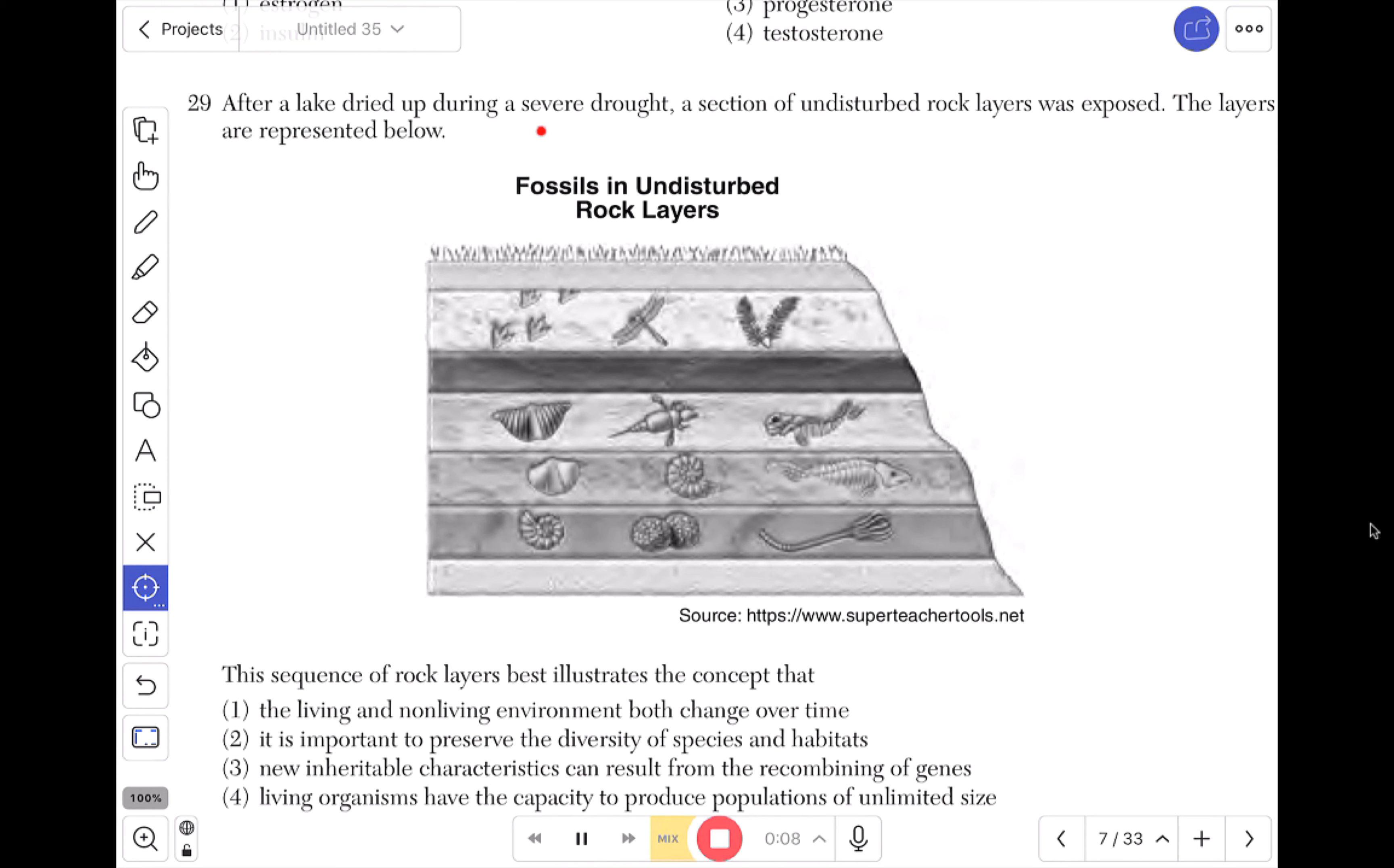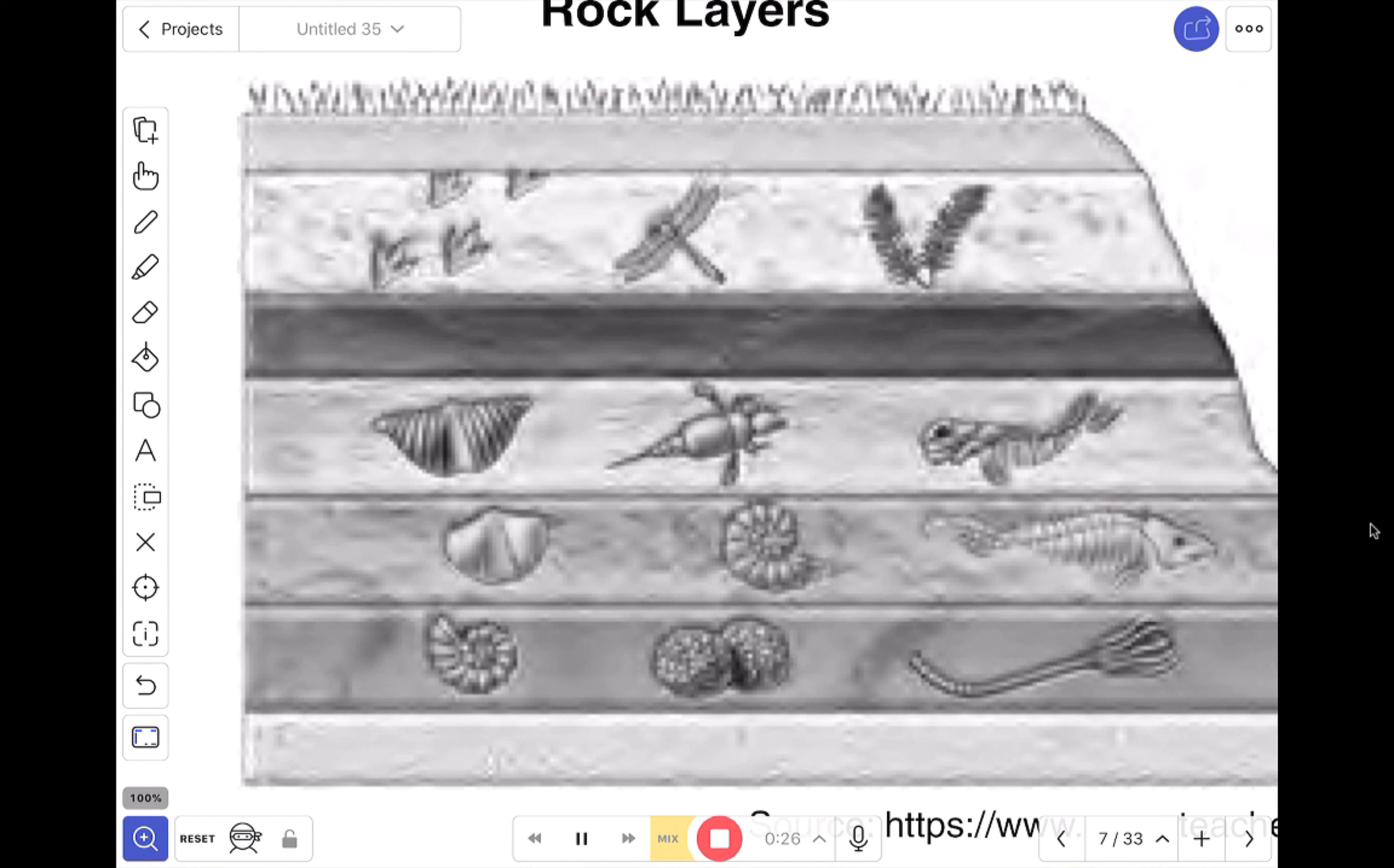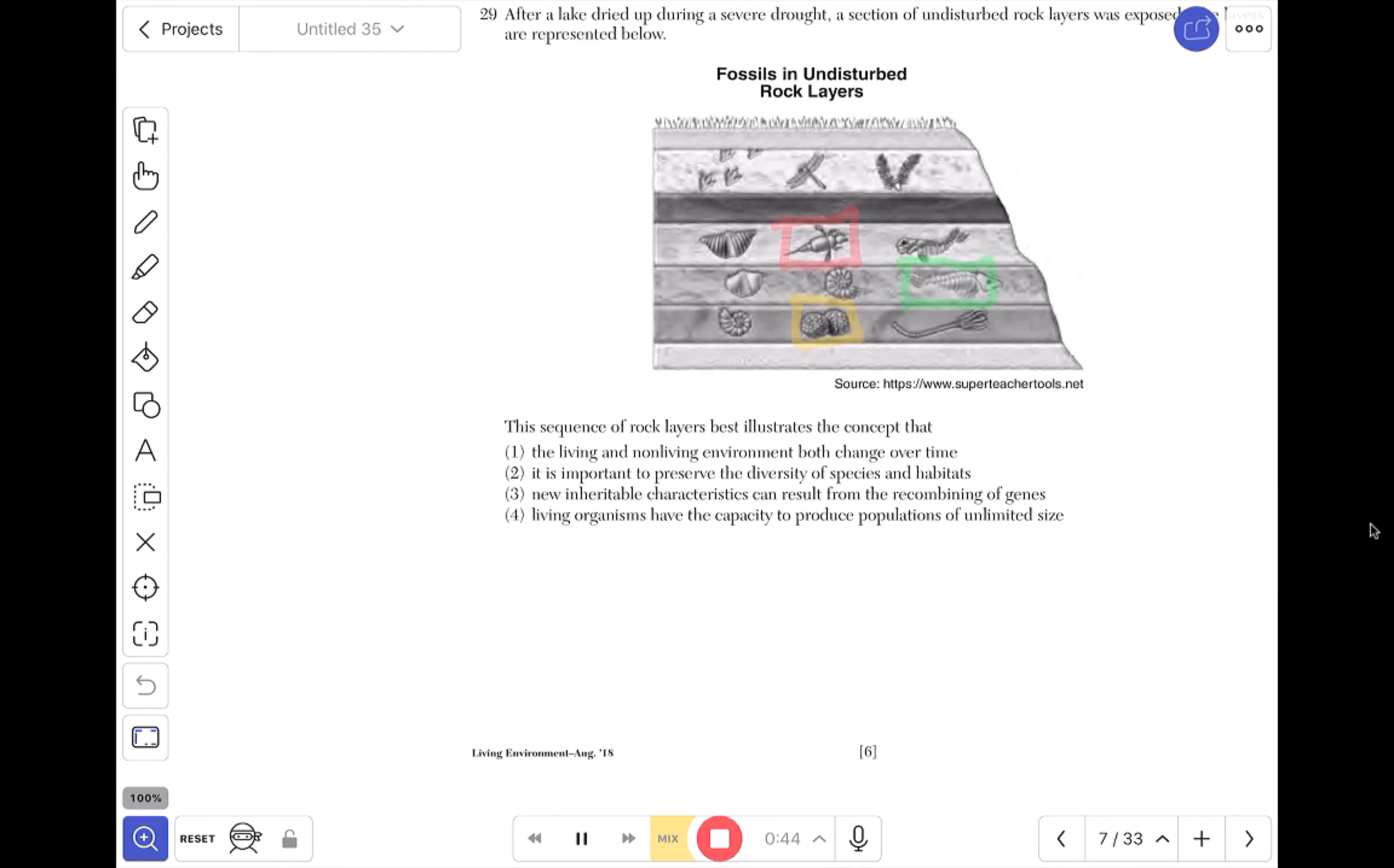Let's begin. Question number 29. After a lake dried up during a severe drought, a section of undisturbed rock layers was exposed. The layers are represented below and I can see that here in this diagram. So I see fossils and undisturbed rock layers. I'm going to zoom in just a tad. If I had any background knowledge I would say you know that this is probably significant. I'm going to go back and instead of using the black highlighter I'm going to use red. So this means something, this means something, and why not this, I'm sure is also relevant. We'll jump down to the questions themselves.